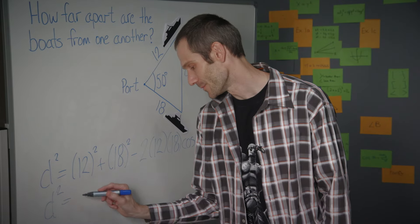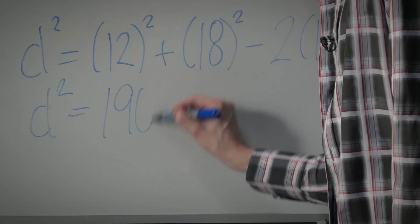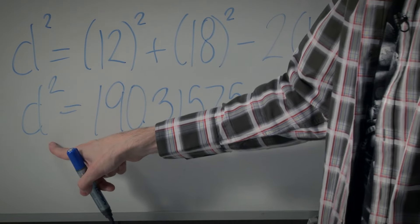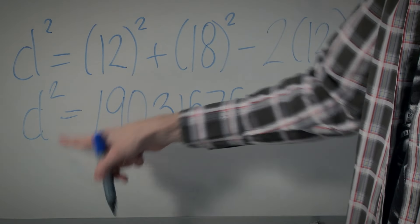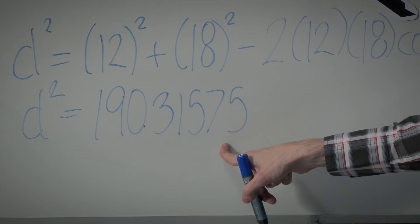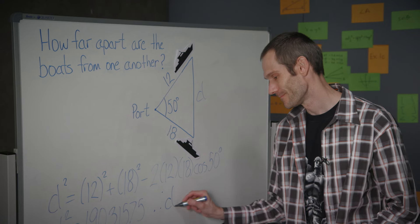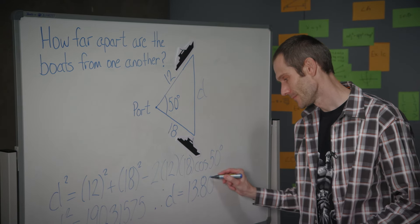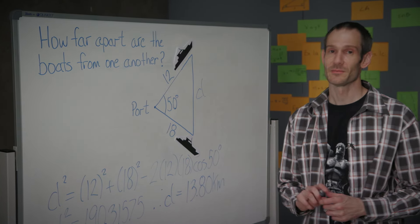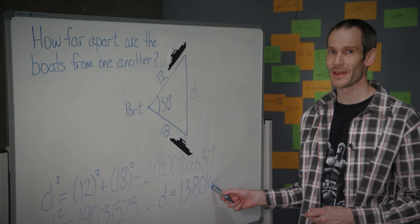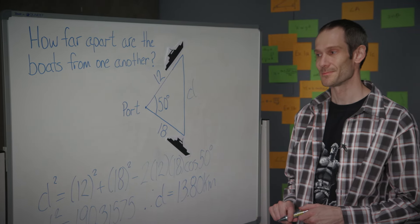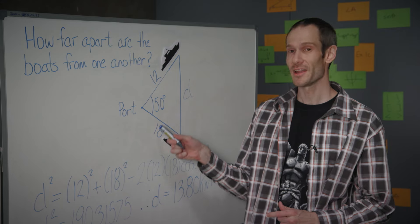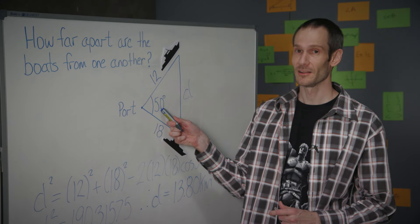From a calculator, we work out the side length d squared. Since I'm after d, I simply take the square root of this number, giving us the distance between the two boats of 13.80 kilometers. So here's an example where I had a triangle, two side lengths, and an enclosed angle.